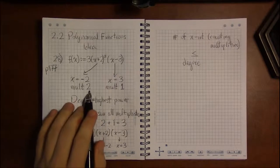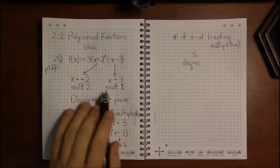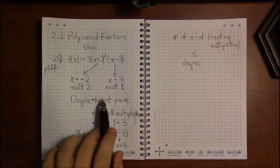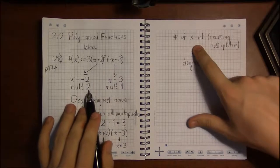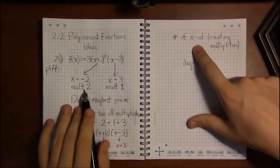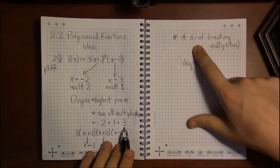Then it turns out that the number of x-intercepts counting multiplicities is always going to be less than or equal to the degree of the polynomial. So here, we would have 1, 2, 3 zeros, or 3 x-intercepts counting this x equals minus 2 as 2, and the degree is equal to 3.